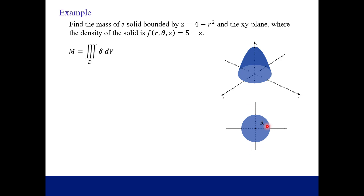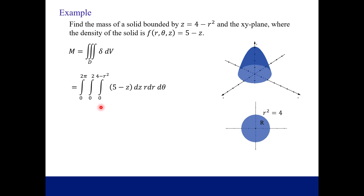Capital R tells us about our boundaries for both little r and theta. In polar or cylindrical coordinates, you can represent a circle as r squared equals the radius squared. So r squared equals 4, meaning the radius of this solid is 2. The radius goes from 0 to 2, and it's a full rotation, so the angle goes all the way to 2π. So our limits of integration: z goes from 0 to 4 minus r squared, r goes from 0 to 2, and theta goes from 0 to 2π. The density function is our integrand, and we convert dV to dz · r · dr · dθ.